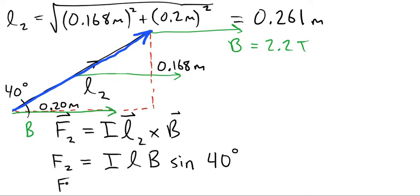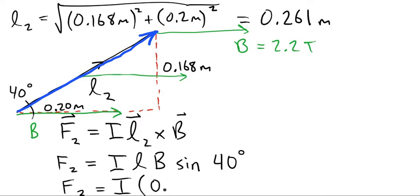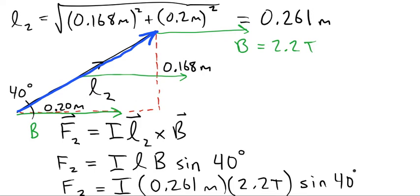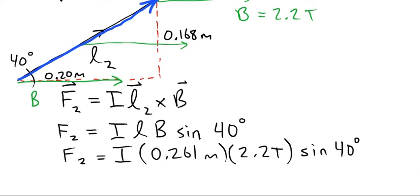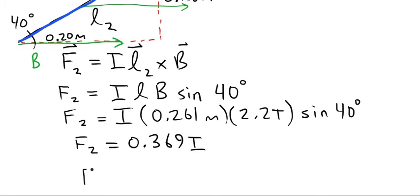But in this case, 40 degrees is the angle between the B field and the L vector. So we'll have F2 equals I times the length times the B field sine of 40. So the strength of it comes out to 0.369 I, but we want to make it into a vector as well, and it ends up being negative 0.369 I K hat.